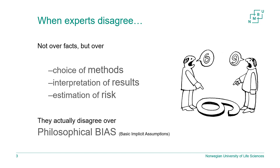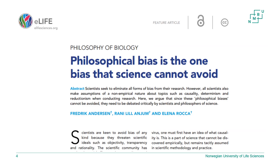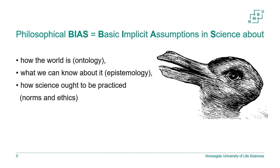Philosophical bias is a term that we started to name something that philosophers have been talking about for centuries. We gave it this name to initiate and improve the dialogue between philosophy of science and scientists. We used the term for the first time in a commentary in eLife, which is a science journal, and it started the comments and discussions also among scientists. We call it philosophical bias — both because of the word bias, but also because it's an acronym for Basic Implicit Assumptions in Science.